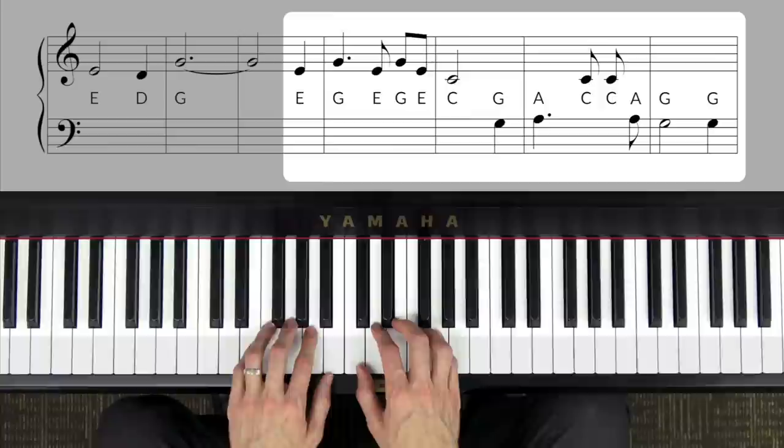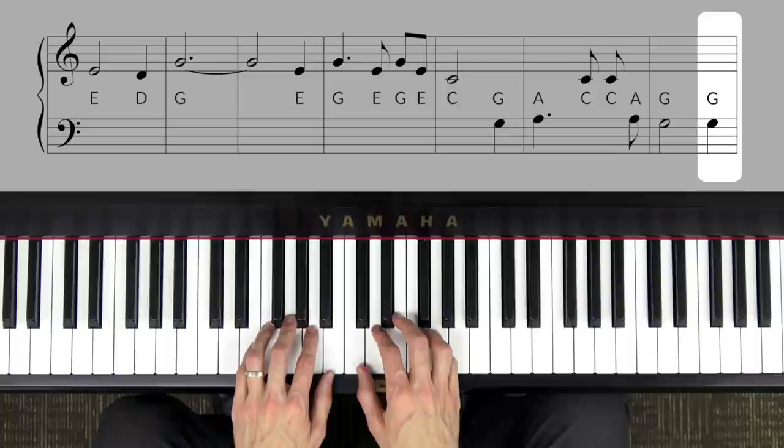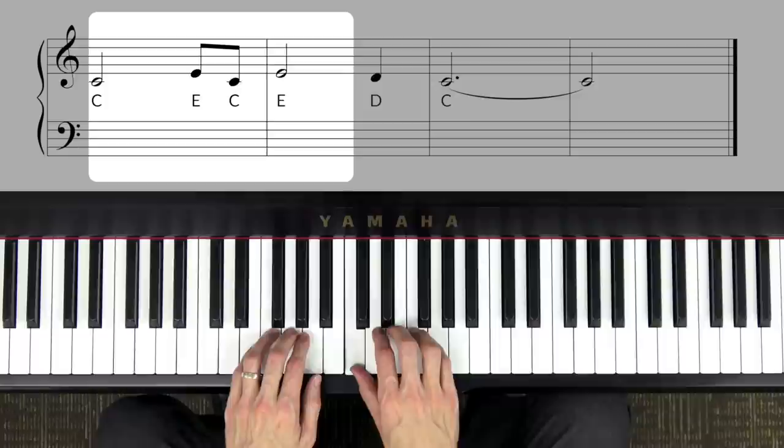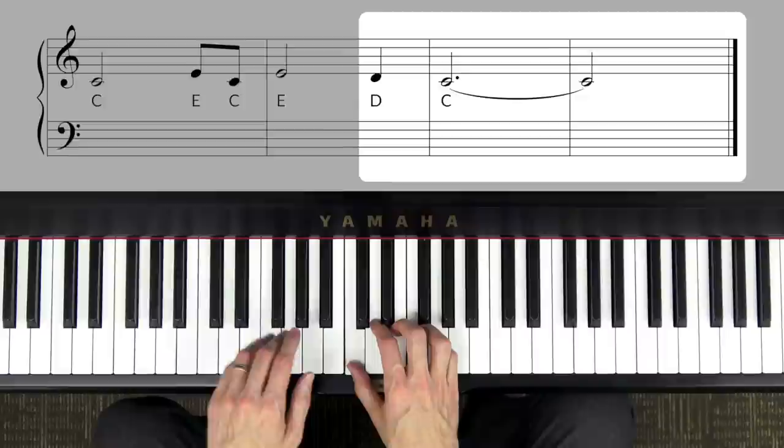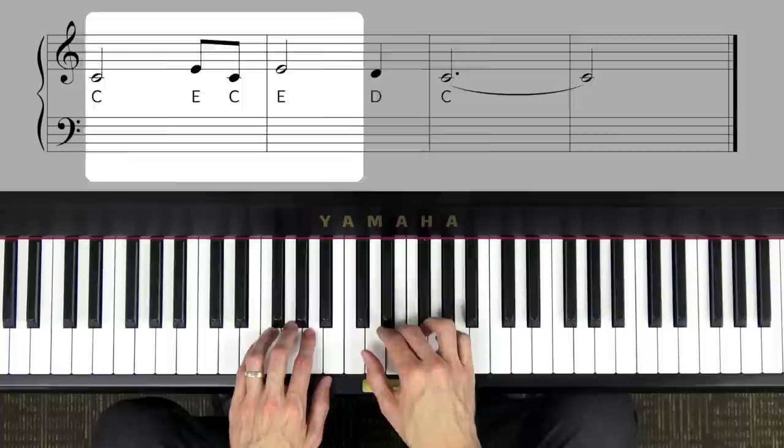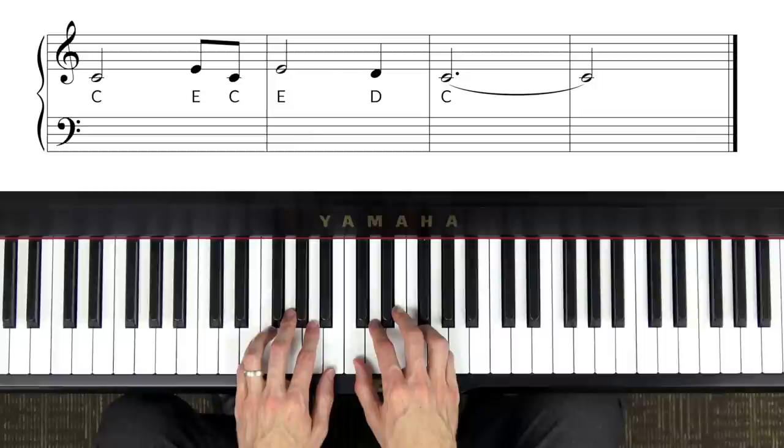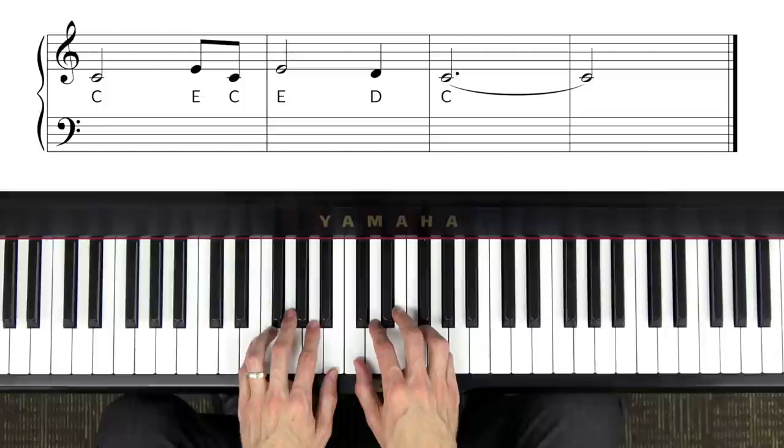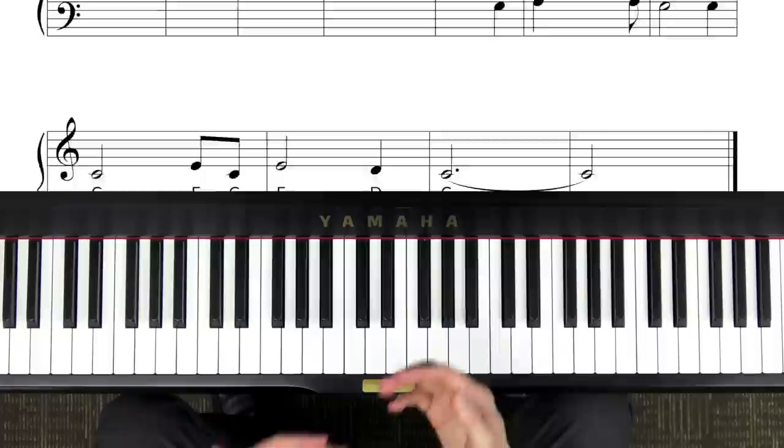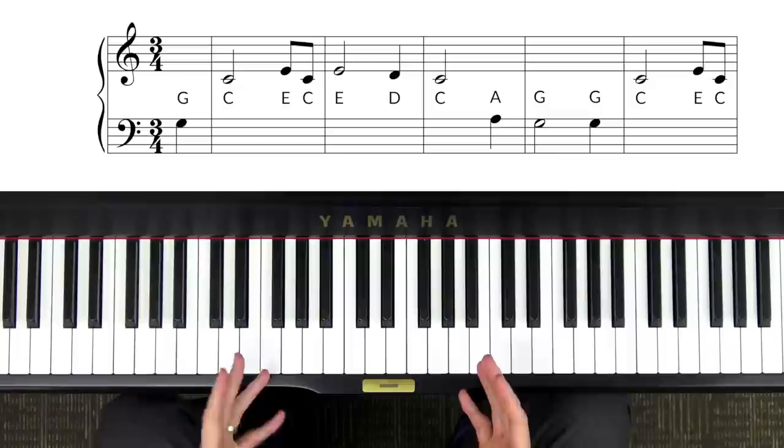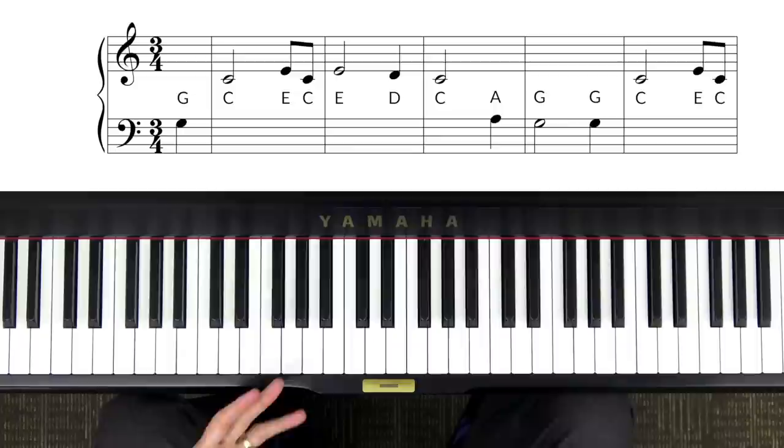All right, here we are at the last phrase which, it so happens, has the same notes as the first phrase. So we have, was blind but now I see, which is G C E C E D C, which again you'll hold for five beats, three plus two. Okay, now you try. Now that you know all of the phrases, go ahead and press pause one more time to practice putting everything together from the start of the song all the way to the end, and then press play when you're ready to have me show you how you can play Amazing Grace along with a backing track.